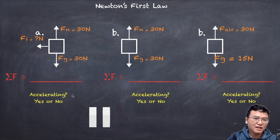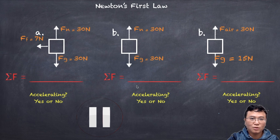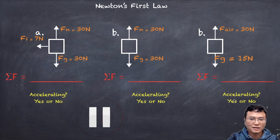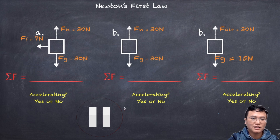Going back to whether each object is accelerating: the first case has a net force of 7 N, so it is accelerating — yes. The second case has zero net force, so the forces are balanced and it is not accelerating — no. The third case has 15 N upward, so it is accelerating — yes. Summary: yes, no, yes.